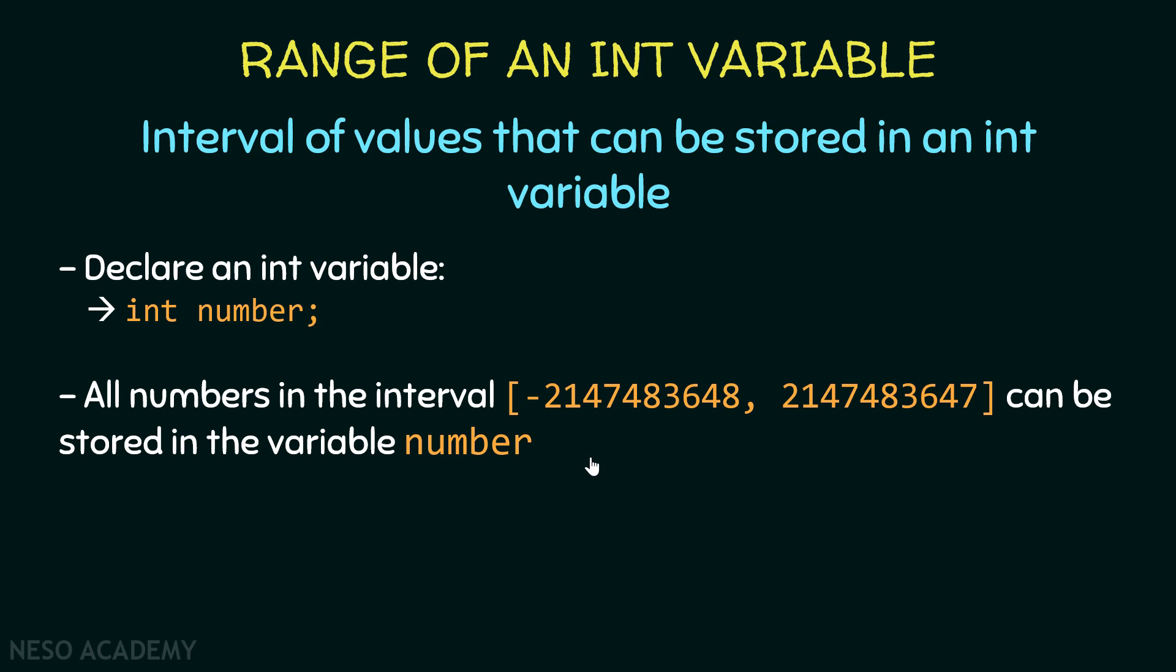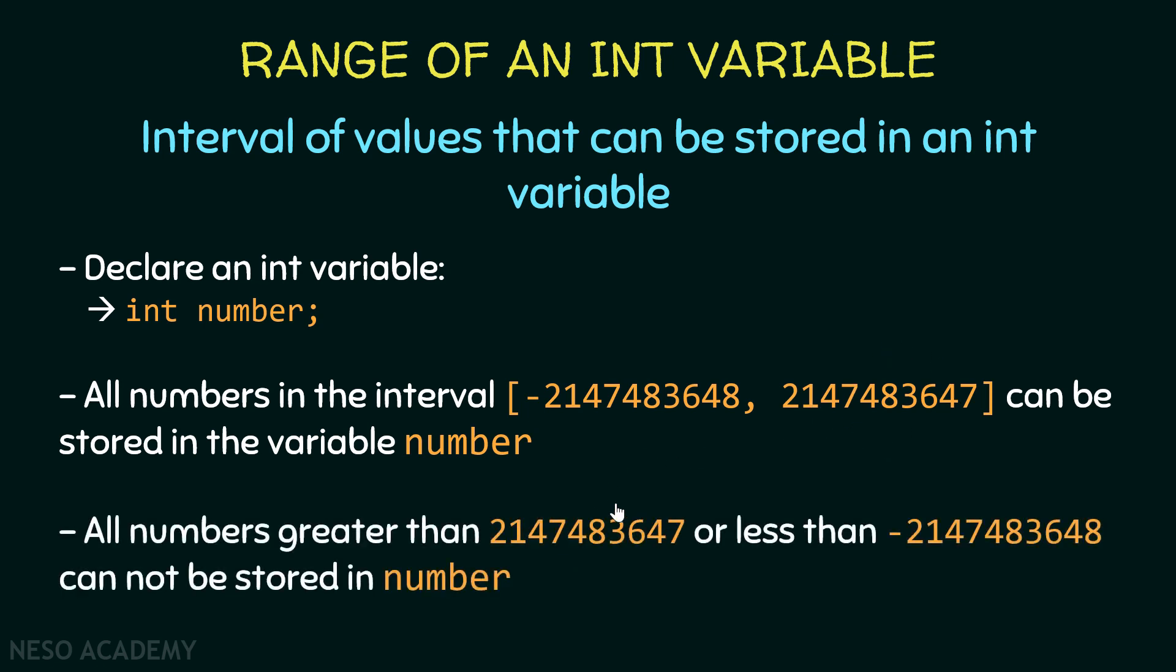So the minimum number is this one and the maximum number is this one. All numbers greater than the maximum number or less than the minimum number cannot be stored in the variable number. And if you try to store a number greater than the maximum or less than the minimum, we will get an error.